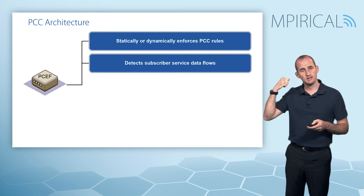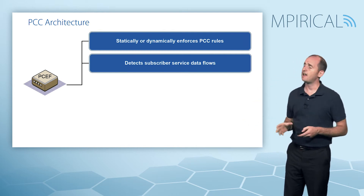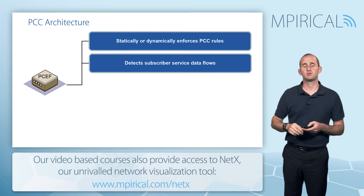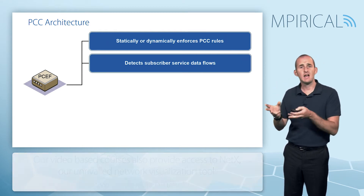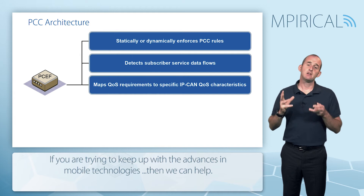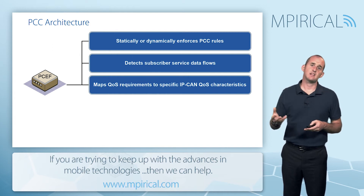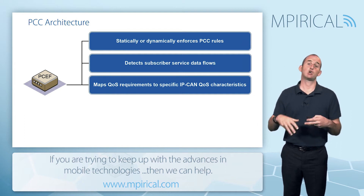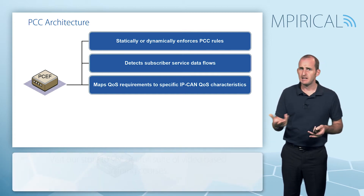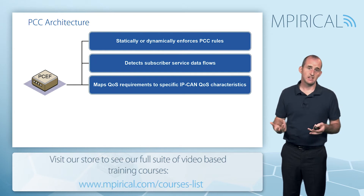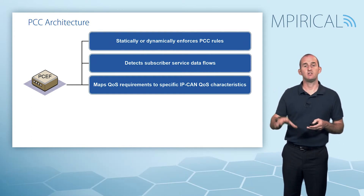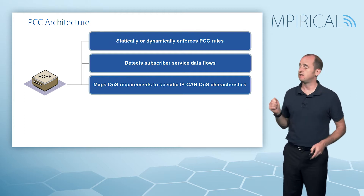The PCEF, once it's had a rule installed, is there to detect the subscriber service data flows — the traffic flows for given individual subscribers. These traffic flows are what we need to detect in order to implement the appropriate policy. A big part of policy is the mapping of QoS. At the PCC level we can set specific QoS levels that must be created in the network. It will be up to the PCEF, installed at something like the PDN Gateway of LTE or the GGSN of GPRS, to make that mapping between requested QoS and the QoS actually available in the IP connectivity access network.